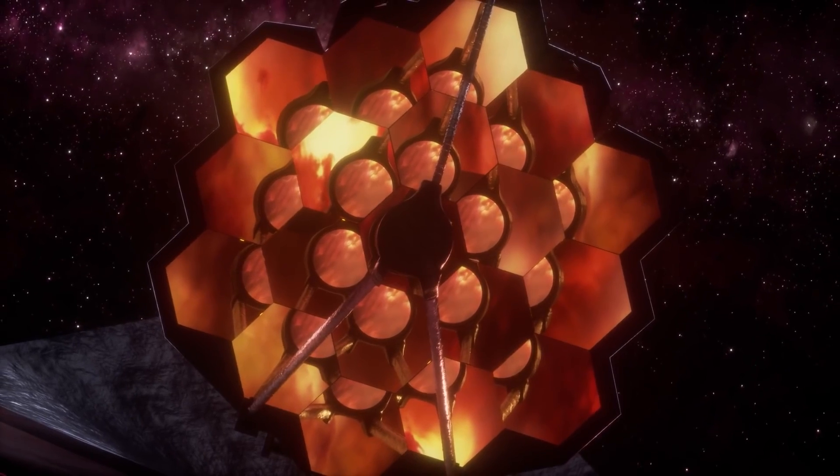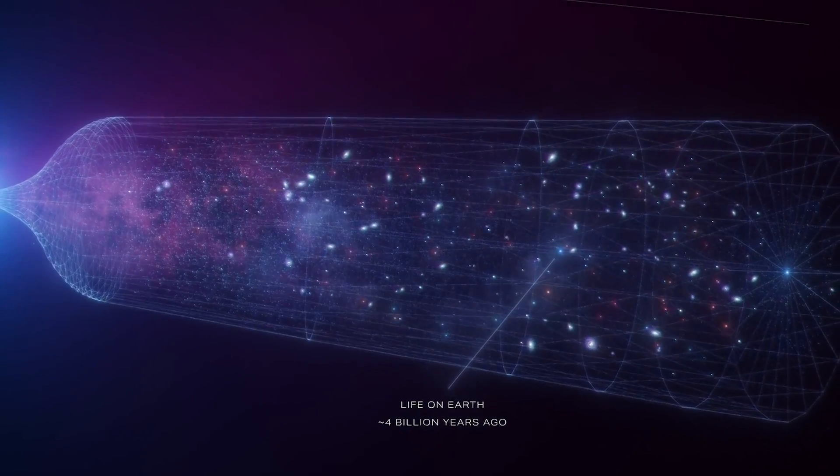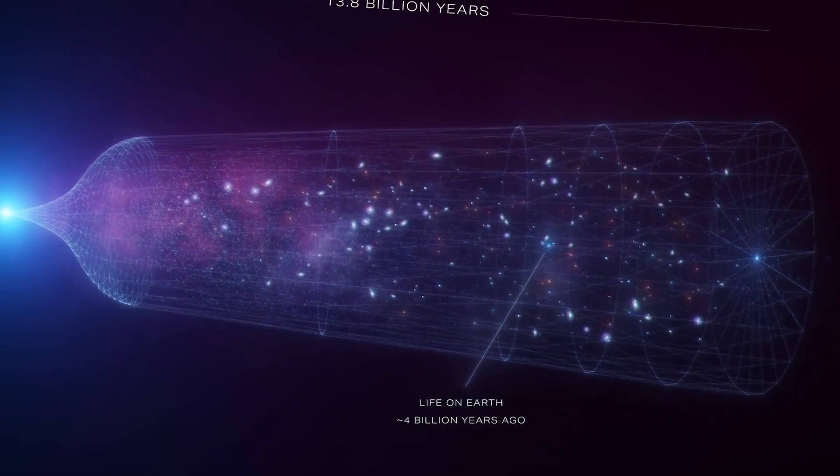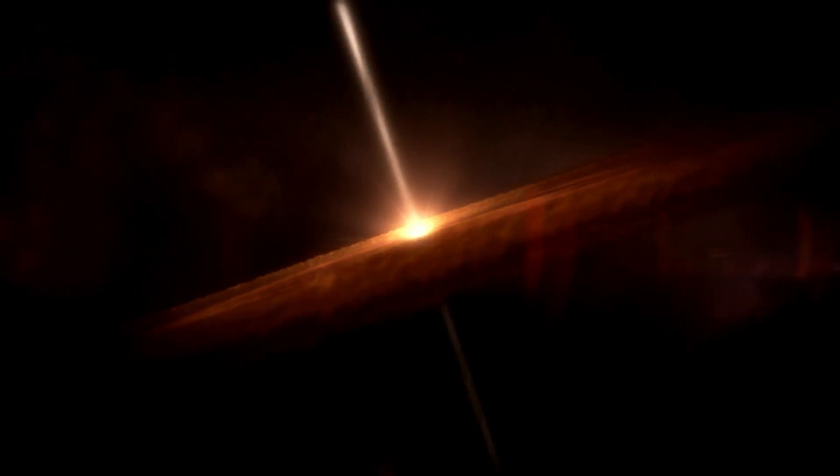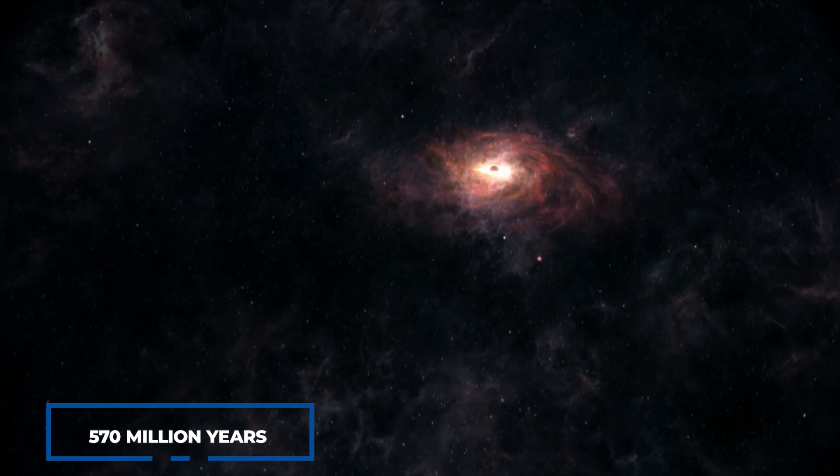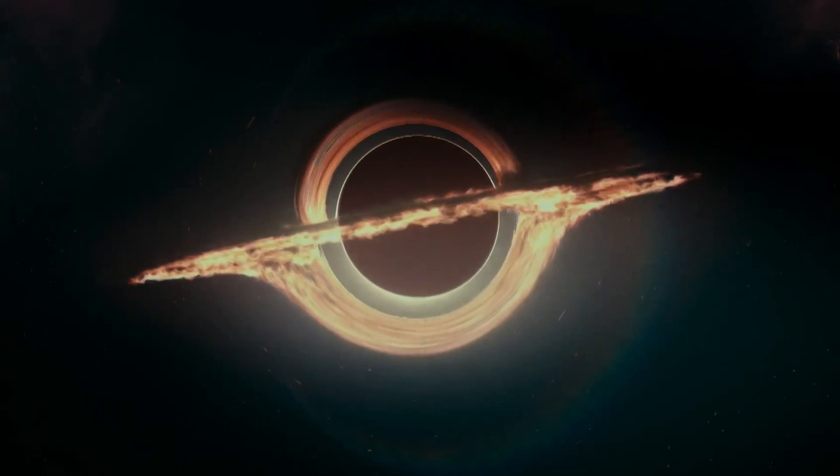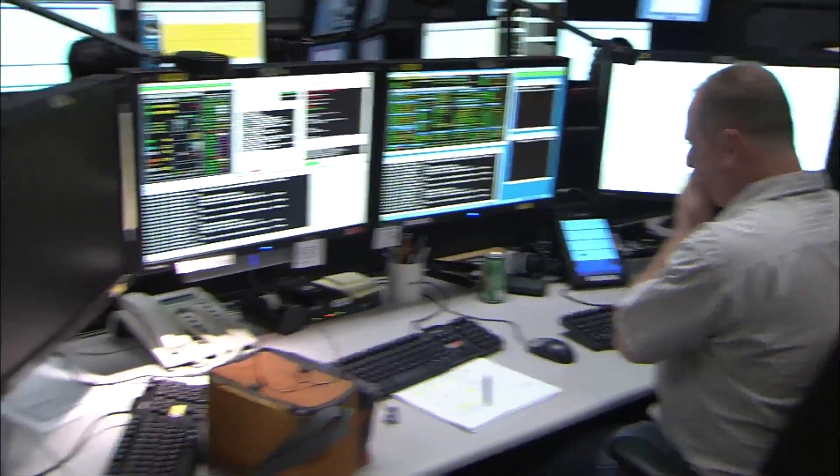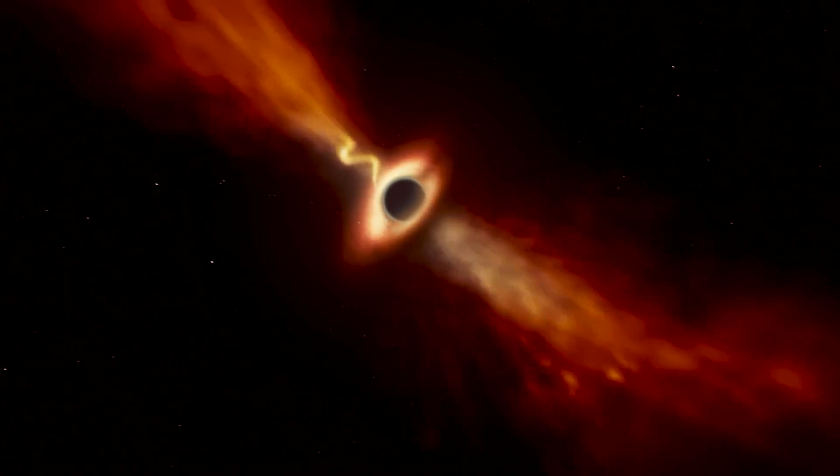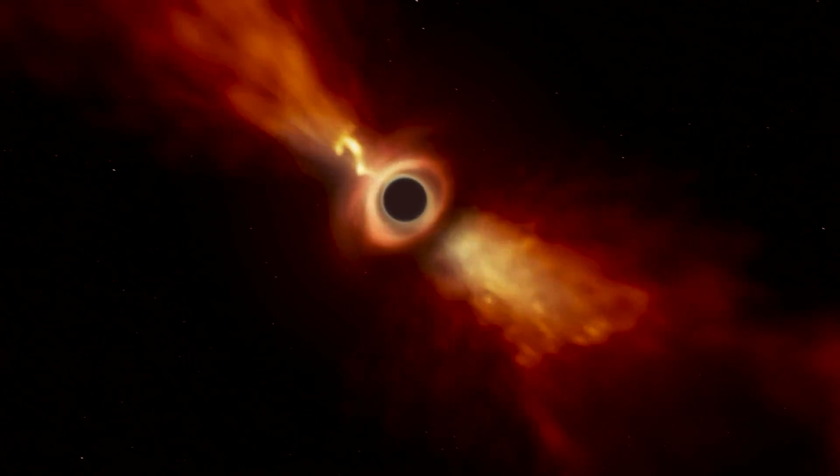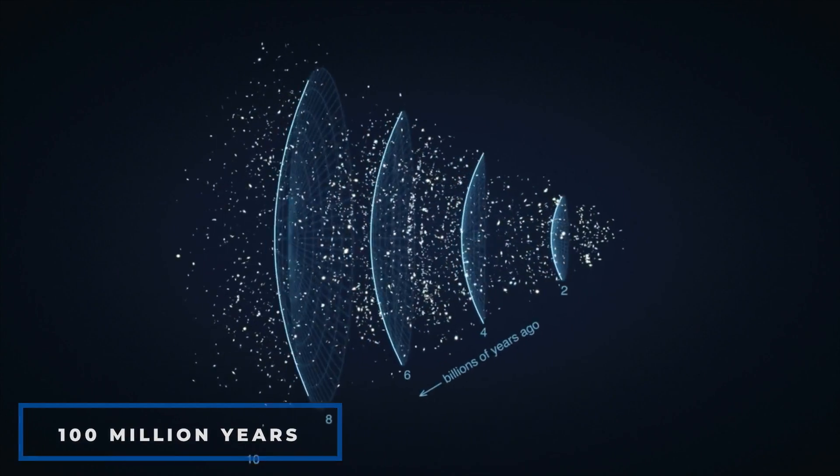The James Webb Space Telescope is an incredible piece of technology, with cameras so powerful that they can peer back to the very beginning of the universe. Recently, it discovered a supermassive black hole at the center of a baby galaxy, just 570 million years after the Big Bang. As soon as the discovery was made, scientists began to speculate about what it might mean. Perhaps this black hole was just one of many that formed during the cosmic dawn, a time when the universe was only 100 million years old and was glowing brightly.